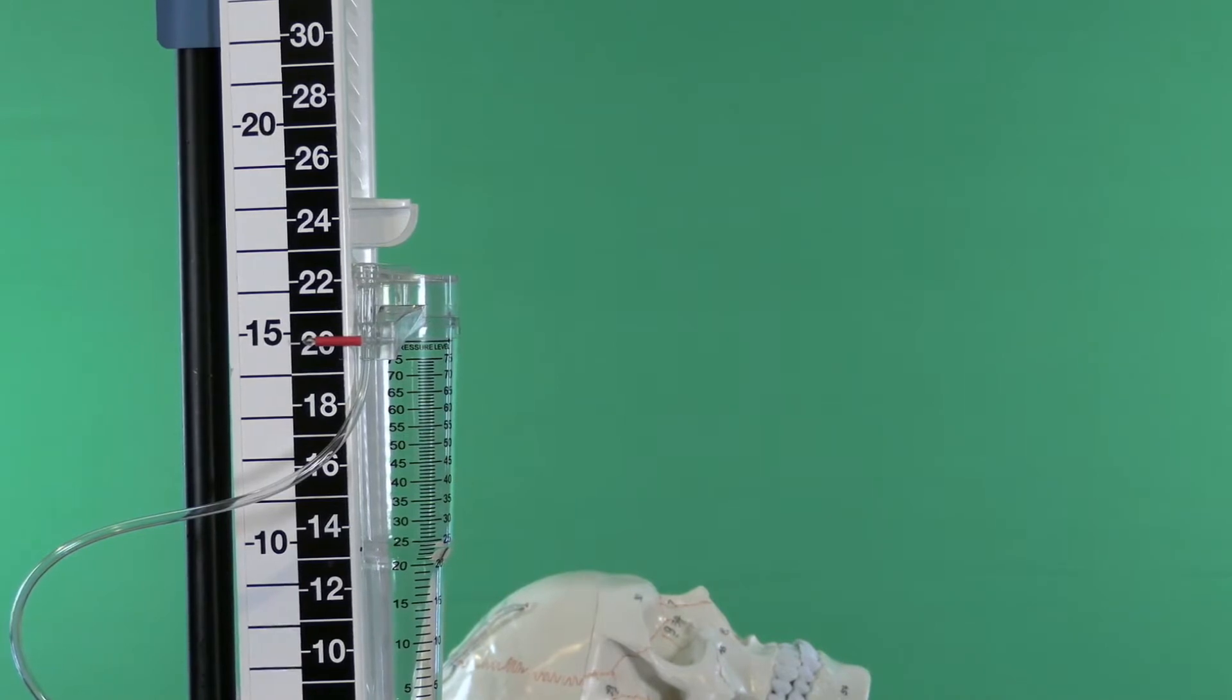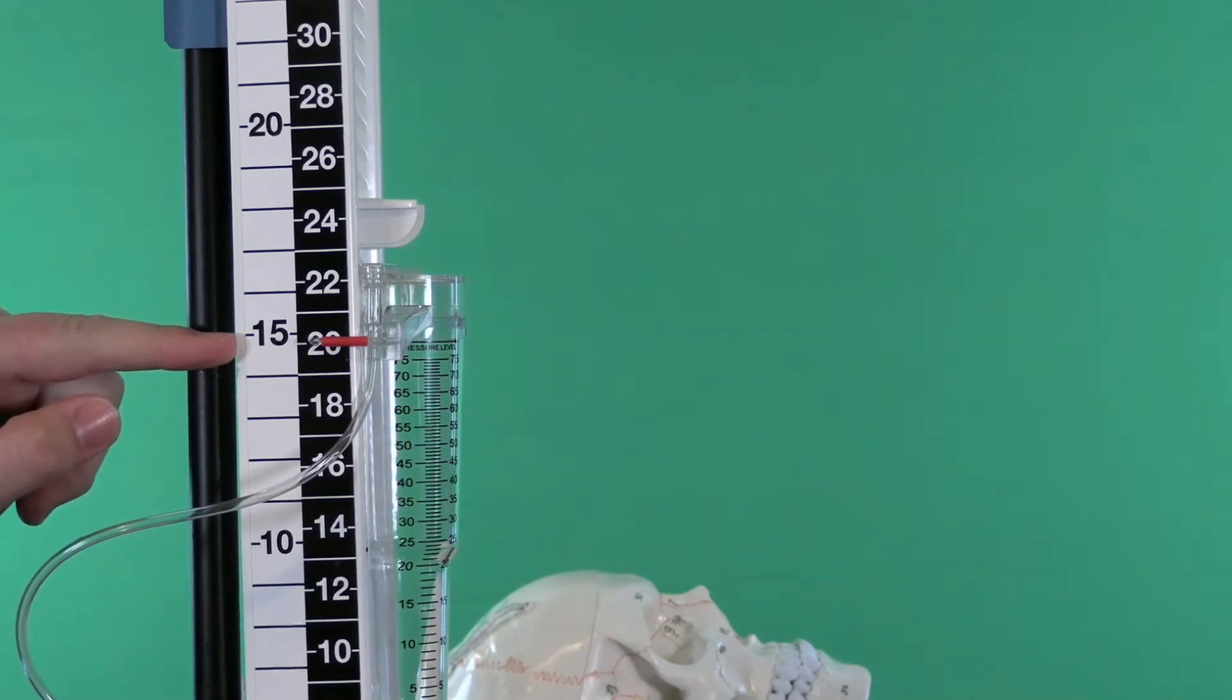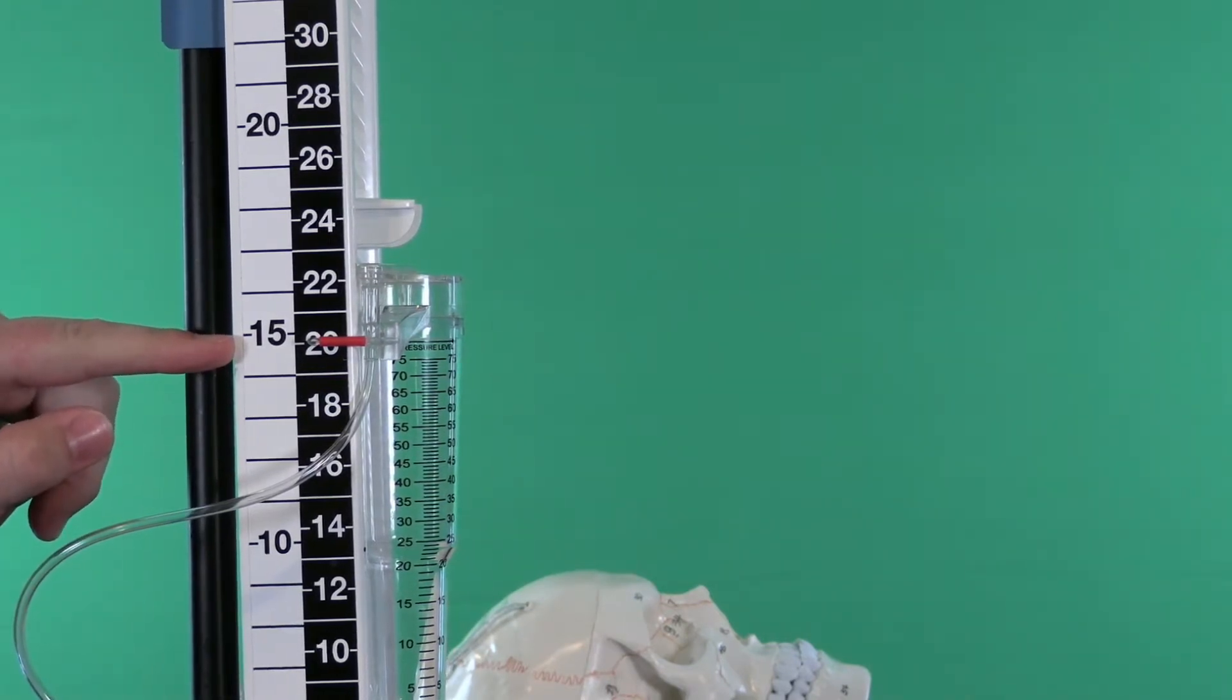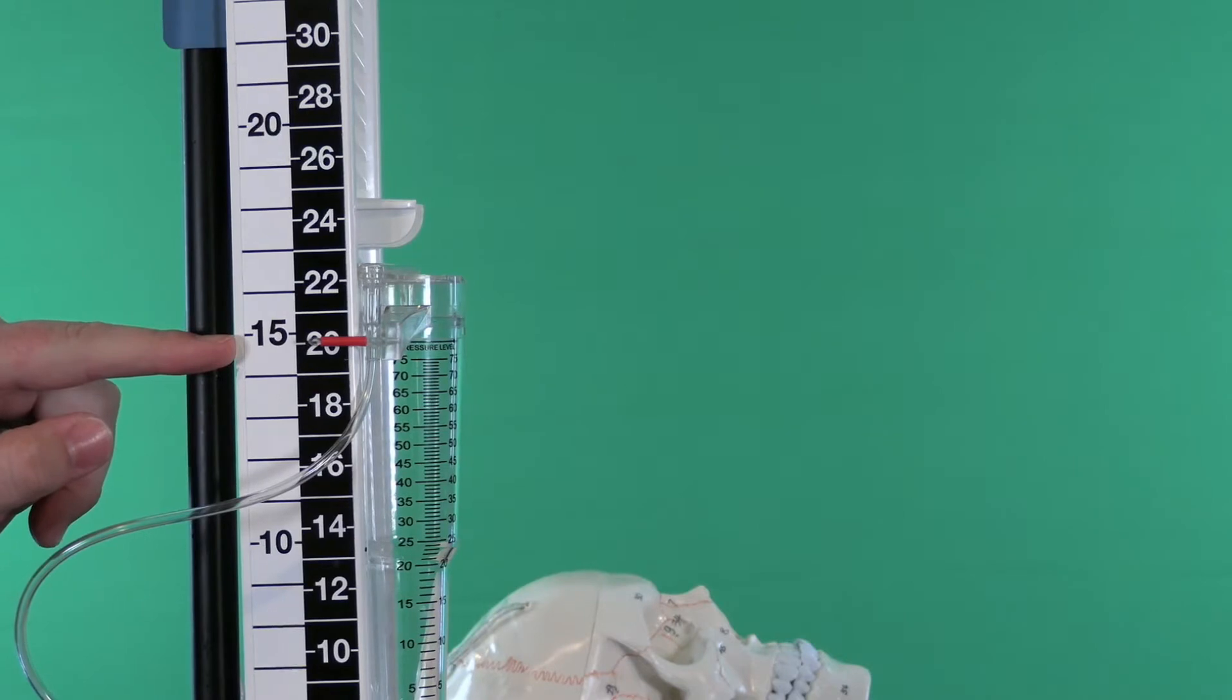If you're subtracting it from your blood pressure, we know blood pressure is in millimeters of mercury, so this would be the number that you would subtract from your MAP to get your cerebral perfusion pressure—MAP minus ICP.